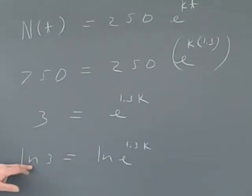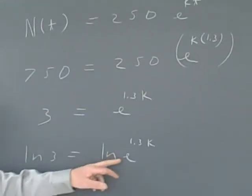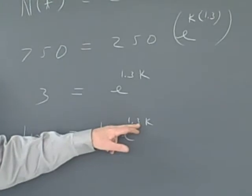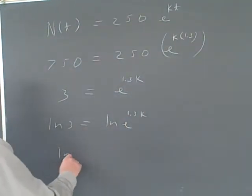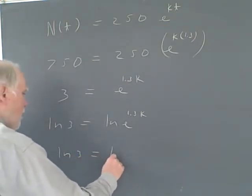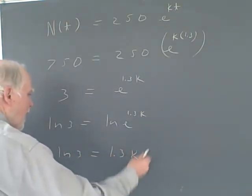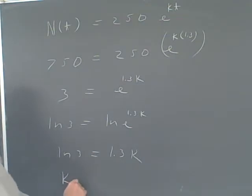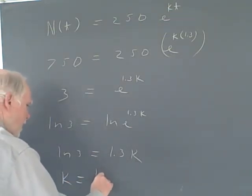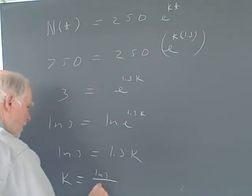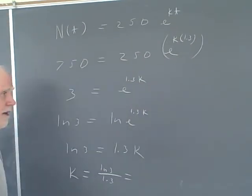The log of 3 is a number in your calculator, and the log of e to the anything is just anything, because these are inverses of each other. So I find that the log of 3 equals 1.3k. I solve for k and realize that k equals the log of 3 divided by 1.3.